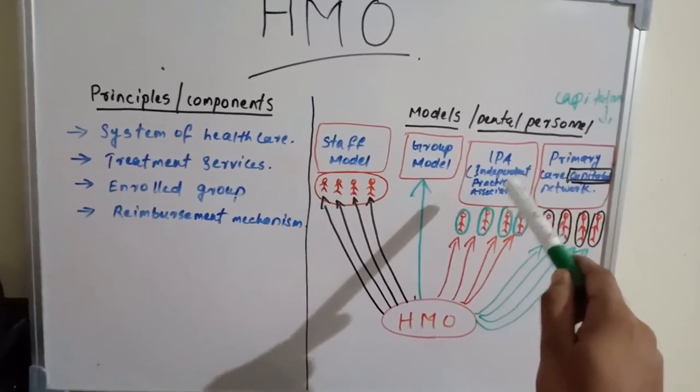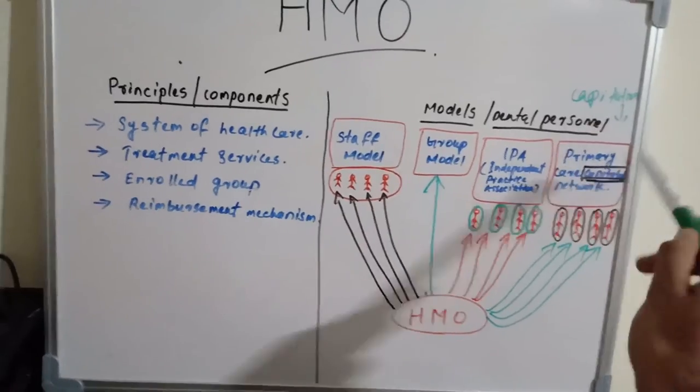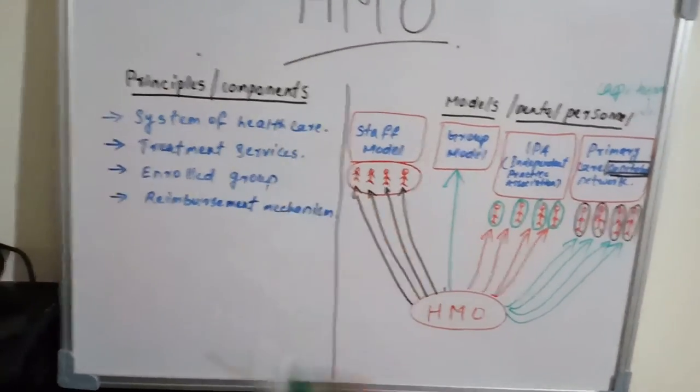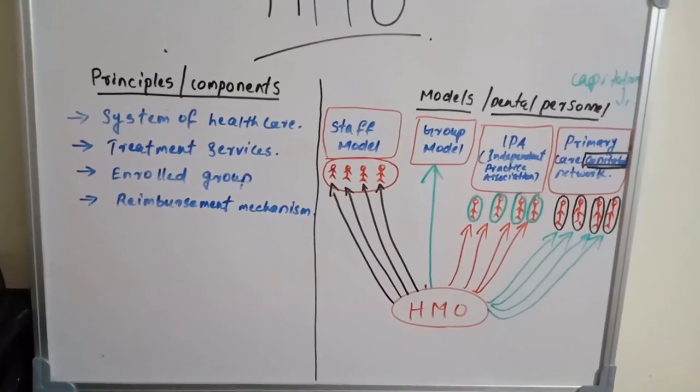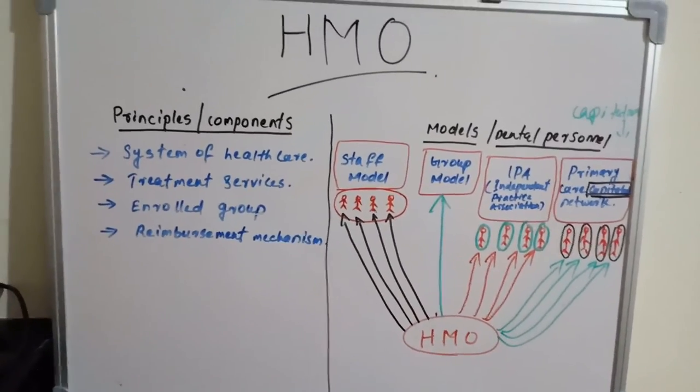This is capitation plan, and these are the components or principles of HMO. So HMO is nothing but a group model for prepaid groups.